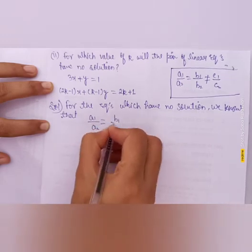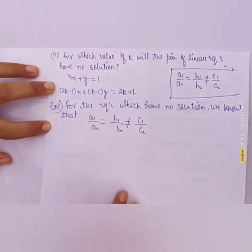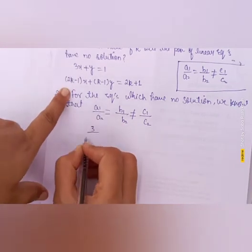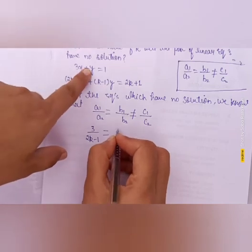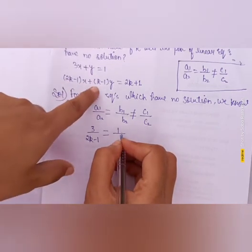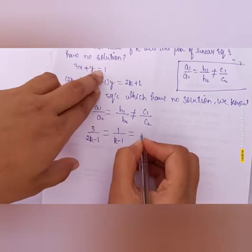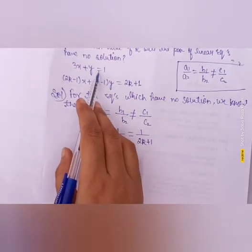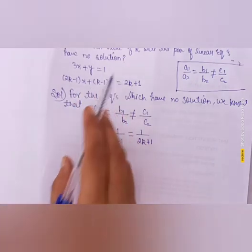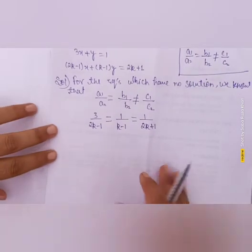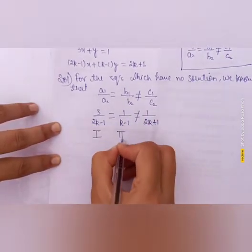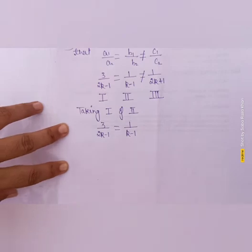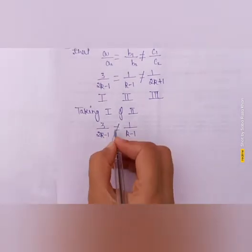For equations which have no solution, we know that a1/a2 = b1/b2, but not equal to c1/c2. Applying the values: a1 = 3, a2 = (2k − 1), b1 = 1 (since the coefficient of y is 1), b2 = (k − 1), c1 = 1, and c2 = (2k + 1). Note that constant values must be on the same side in both equations. Taking Term 1 and Term 2: 3/(2k − 1) = 1/(k − 1).